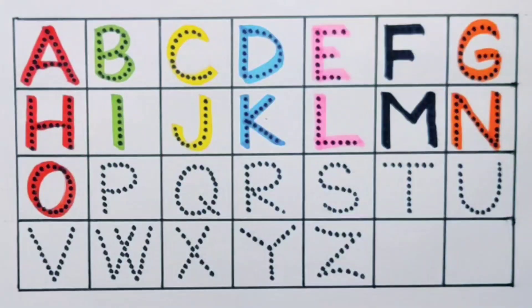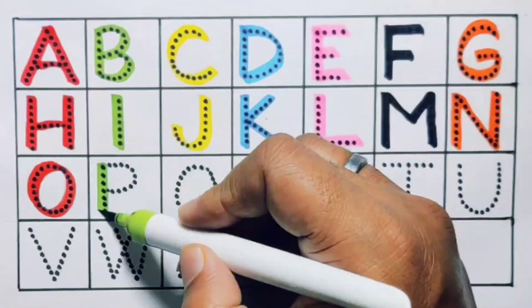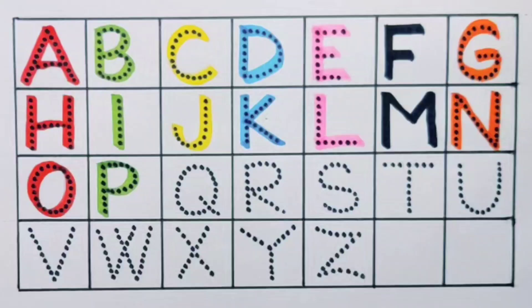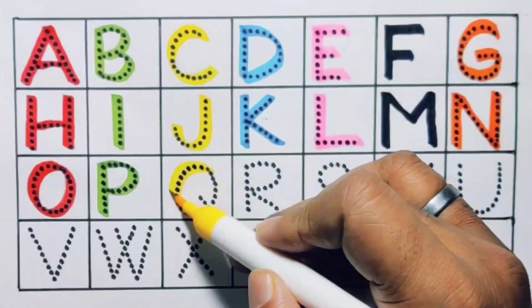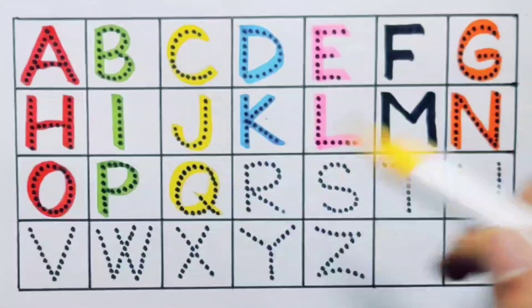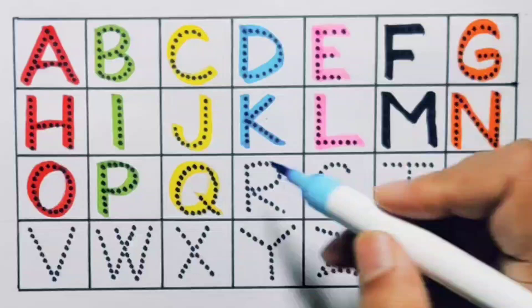Next, P, P for paper. Next, Q, Q for queen. Next, R, R for rabbit.